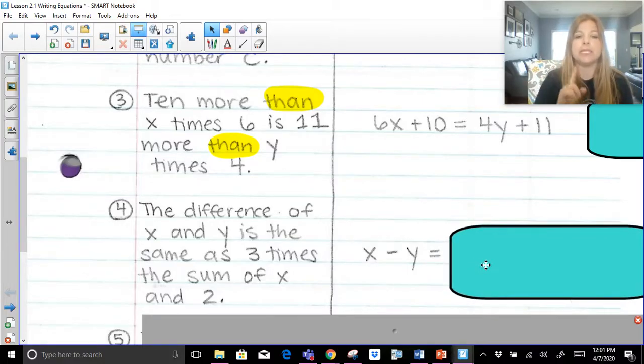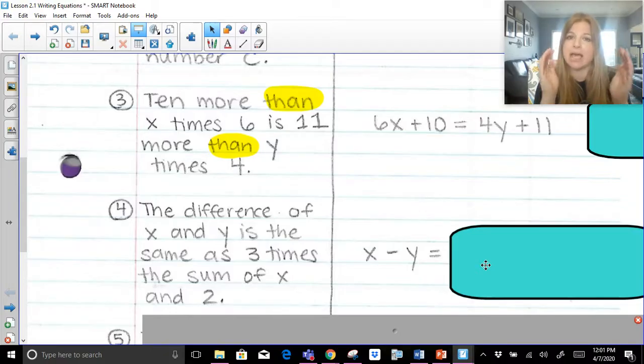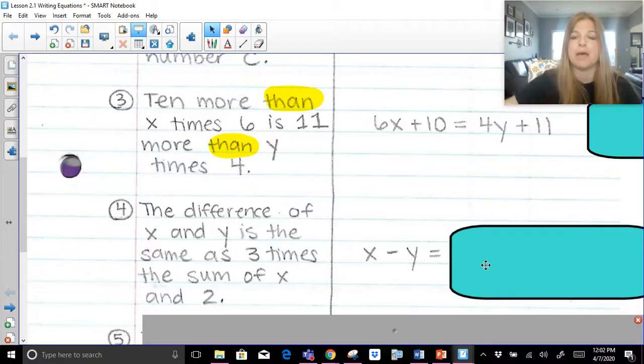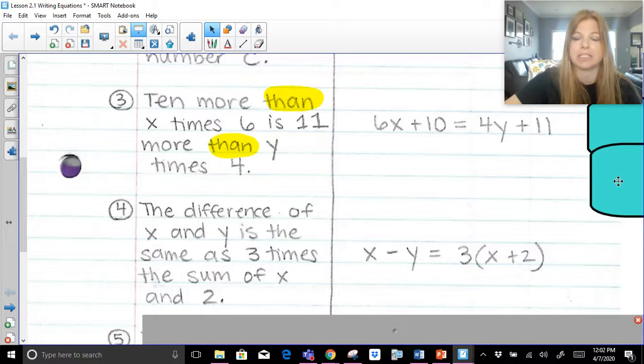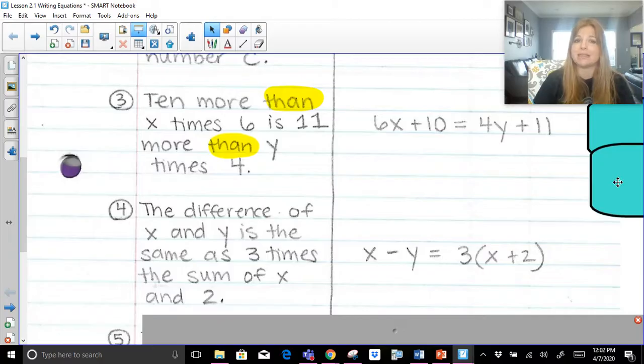3 times the sum. So 3 times the entire sum, that's going to mean we need parentheses. 3 times the entire sum of x and 2. So 3, open parentheses, x plus 2. Now, if you don't have those parentheses, it's going to be wrong because then it would just be 3 times x. So if I do 3 times the sum, that sum needs to be in those parentheses, that x plus 2.